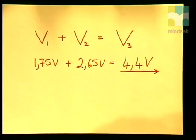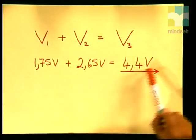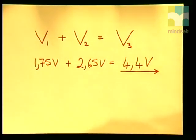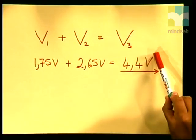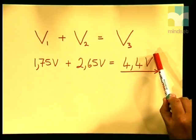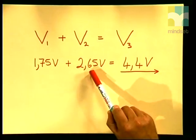In series, each resistor receives a share of the total amount of energy transferred per coulomb. Resistor 1 receives 1.75 joules per coulomb and resistor 2 receives 2.65 joules per coulomb. So if we take the readings of V1 and V2 and add them together, we get our result of 4.4 volts. In other words, this reading of V3 represents the total potential difference in that circuit. Therefore, potential difference is divided in a series circuit.